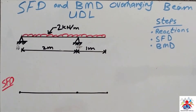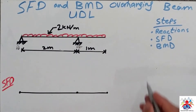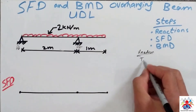Hello and welcome to my YouTube channel. In this video I am going to explain how to draw shear force and bending moment diagram of an overhanging beam having UDL on its entire length. We have three steps to follow: reactions, shear force diagram, and bending moment diagram. First of all, we will calculate reactions.